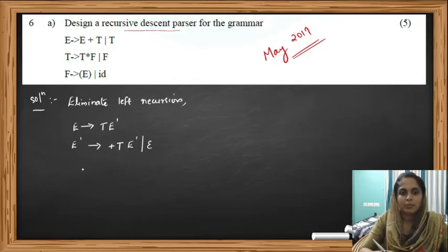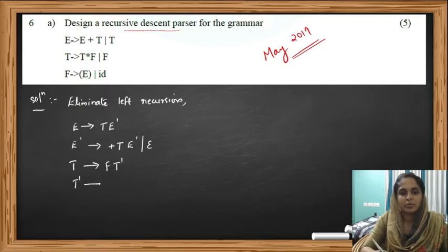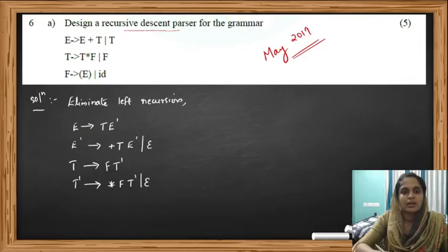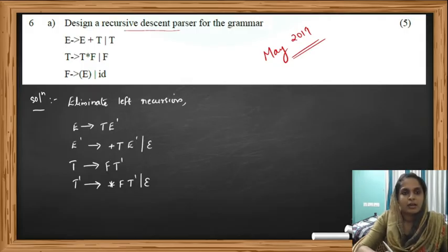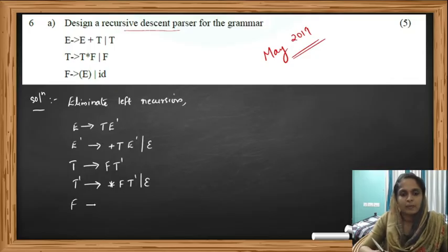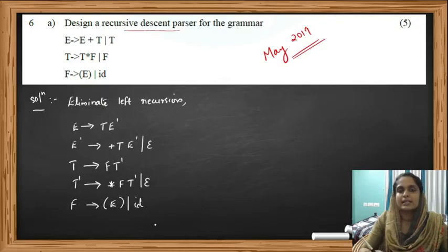The second production is also left recursive, so we have to convert it to T → FT' and T' → *FT' | ε. Finally, the last production F → (E) | id contains no left recursion — the LHS is F and none of the terms on the right hand side start with F. So that production we can write as it is. This is our grammar which is free from left recursion.